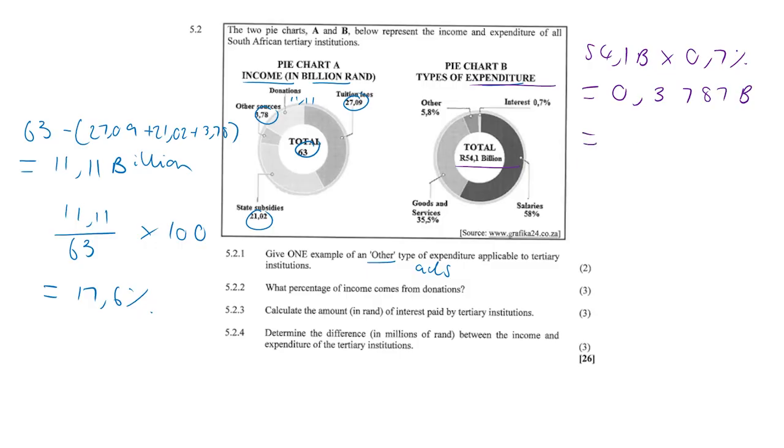And the way we write that is going to be 378,700,000. Okay, this is how you write 54.1 billion, just in case you guys were battling with it. So it's 54 for the billions. And there's your millions. And there's your hundreds of thousands. Okay, so that is how you would write 54.1 billion.